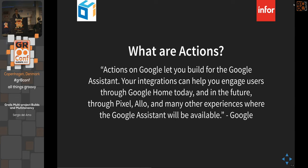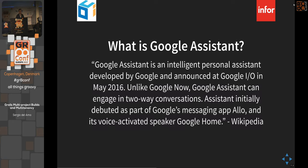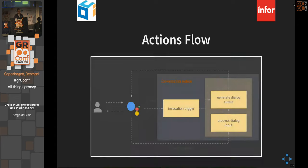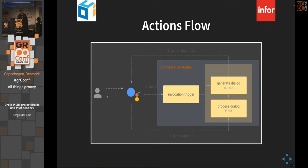The heart of Google's platform is called Actions. These actions work on Google Home, mobile phones, and will work on messaging services going forward. The official definition: Actions on Google let you build integrations that help engage users through Google Home today, and in the future through Pixel, Allo, and other experiences. Google Assistant can now do two-way conversations, not just single question-and-answer exchanges.